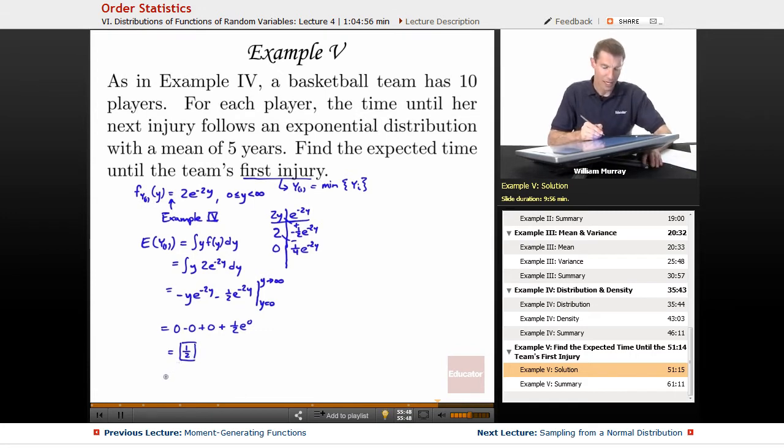What that means is that if you're this basketball team coach, and you're wondering how long is it going to be until I see an injury in one of my players, the expected time—of course, you hope not to injure anyone ever—but the expected time until your first player gets injured is one half a year, six months. That's not so good. Dangerous sport, stay away from it.